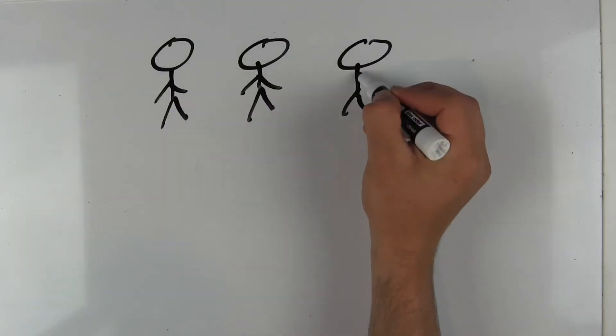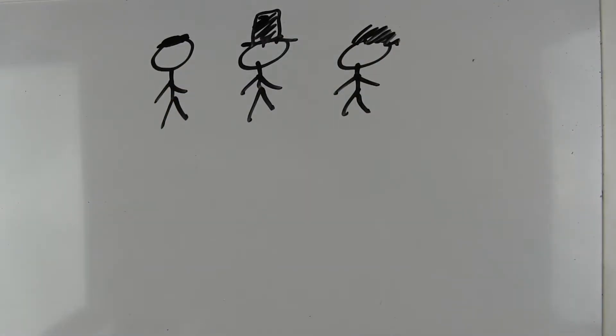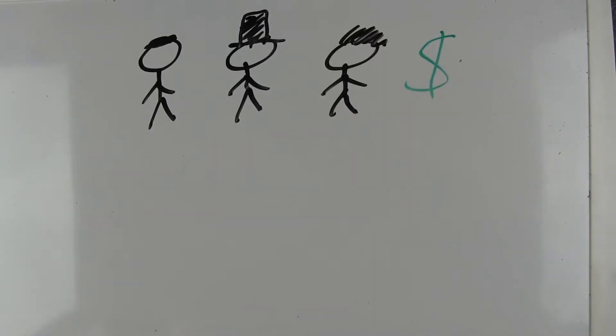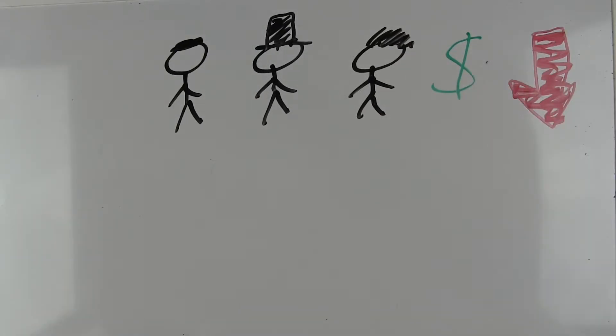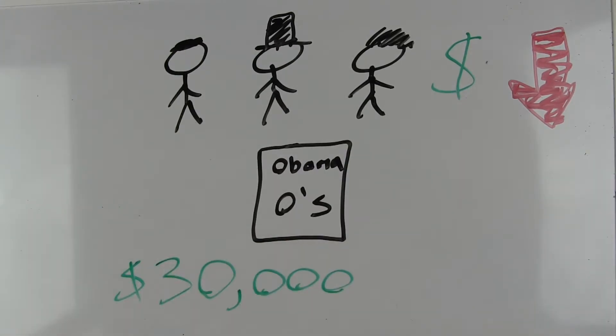The three founders now had no money and were in massive debt from the company. In order to earn money, they decided to sell Obama O's cereal, which they came up with before the election, and they earned $30,000 by selling cereal.